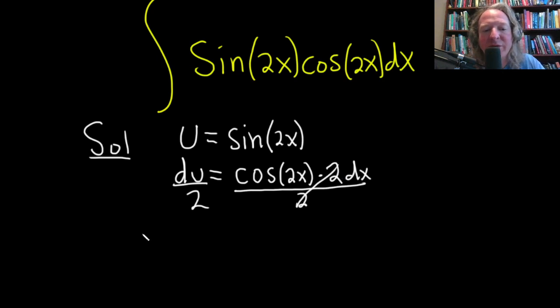So we have du over 2, which we can write as 1 half du. And that's equal to cosine of 2x dx.